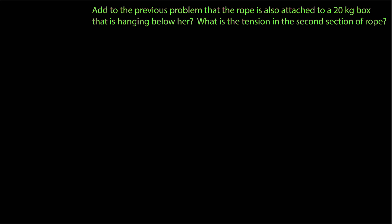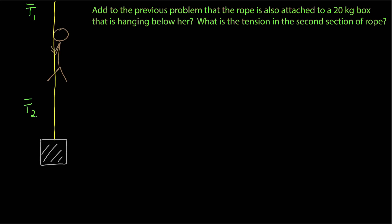We're going to do another Newton's second law problem in one dimension by adding some complexity to the previous problem. We had Alice hanging on to a rope being pulled up by a winch. Now we're going to add that the rope is also attached to a 20 kilogram box hanging below her. What is the tension in the second section of rope? The first thing is always to draw a picture. Here's the rope — Alice is hanging on to it and it is also attached to a box.